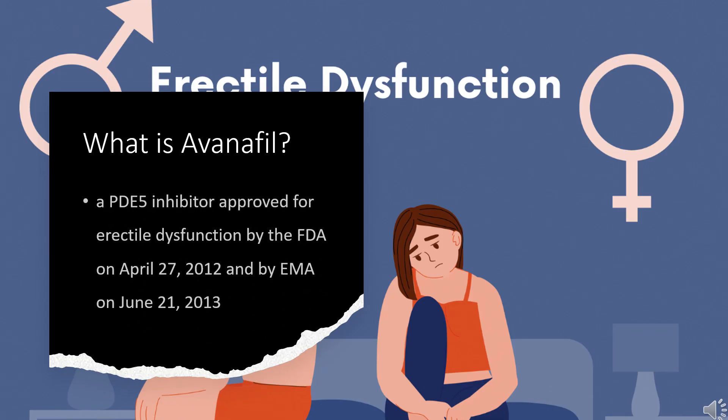What is Avanafil? Avanafil is a PDE5 inhibitor approved for erectile dysfunction by the FDA on April 27, 2012, and by the EMA on June 21, 2013.